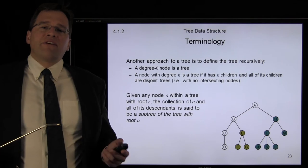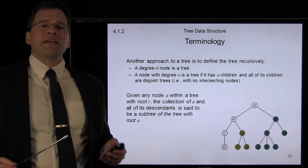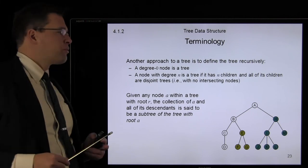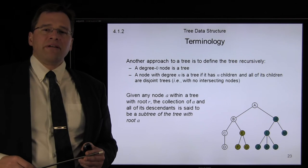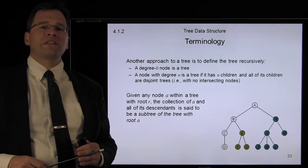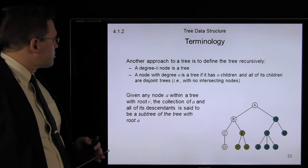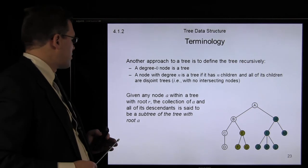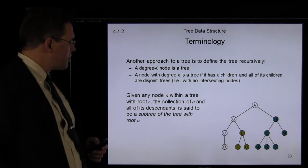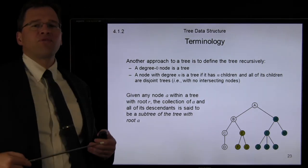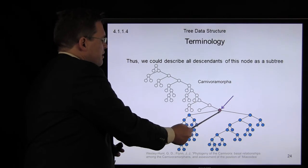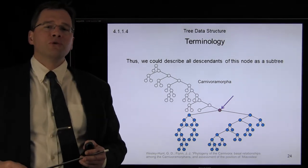Another way of defining a tree is to define it recursively. A node of degree zero is said to be a tree — so any single node is a tree, or a leaf node. A node of degree N is said to be a tree if it has N children, and each of these children are themselves disjoint trees — that is, none of the nodes within those trees intersect. So, given any particular node within a tree, if we take that node and all of its descendants, this forms a sub-tree. Here we have E — all of its descendants form a sub-tree rooted at E.